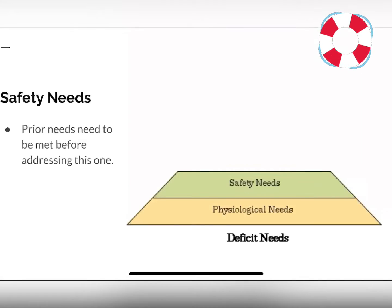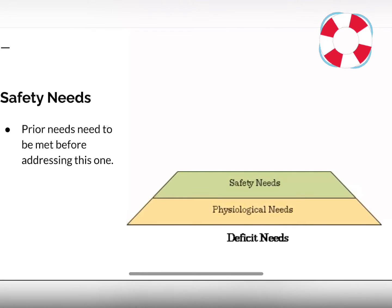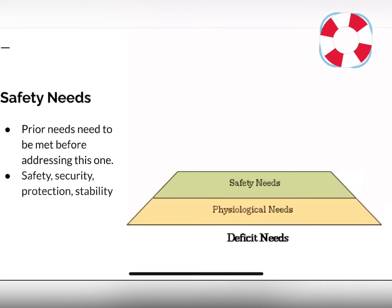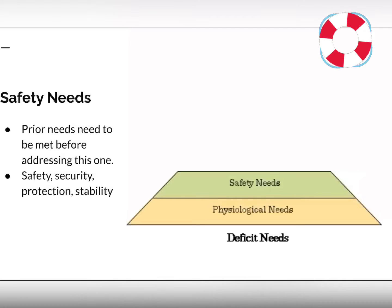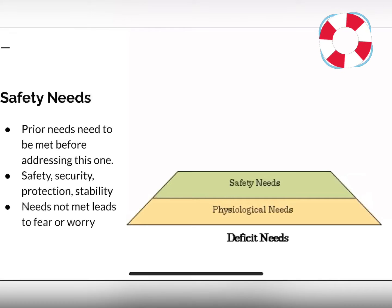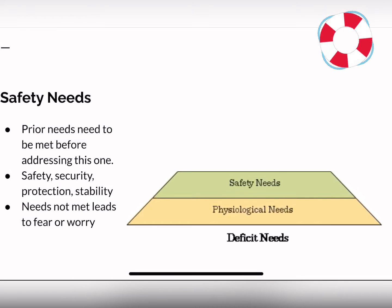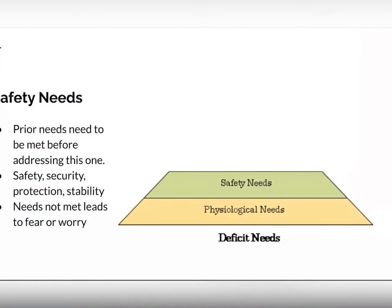Next up, we have our safety needs, which is the second layer of the pyramid. Before we can address this layer, prior needs need to be met. This layer includes things like safety, security, protection, and stability. These needs not being met can lead to fear or worry.